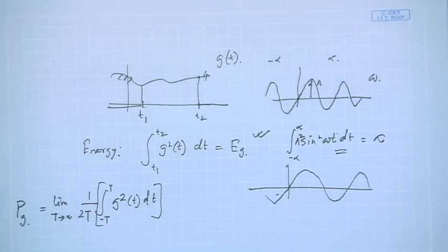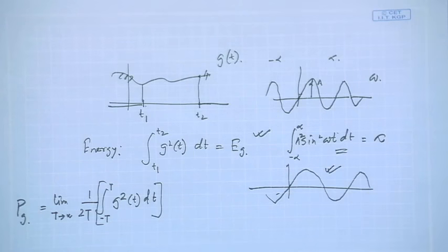For signals with infinite energy, like a sinusoidal, the power can still be finite. Whether you calculate over the entire duration or just one period, you get the same result because the pattern keeps repeating — more g²(t) terms are balanced by more time. So the power remains constant. We will classify signals accordingly based on these two parameters: energy and power.